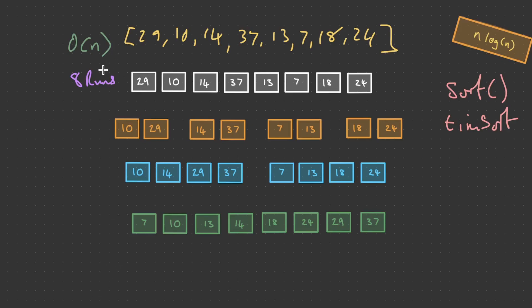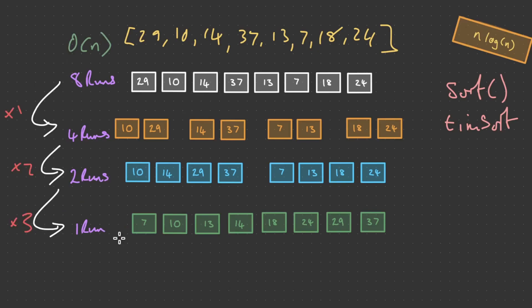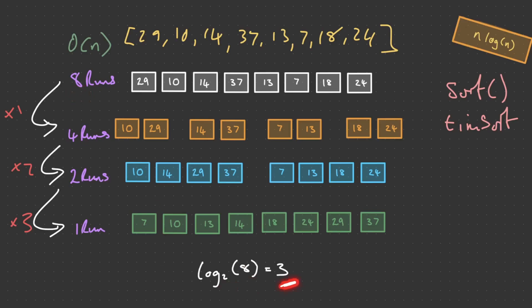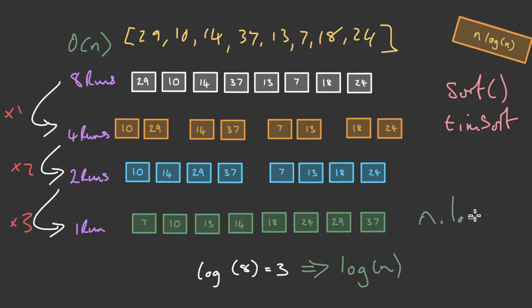The initial process of converting the array into eight runs takes linear time because we iterate through each value — so this part of Tim sort is O(N). For the conquering section, how many times do we divide eight runs to get to the last run? We go from eight runs to four, to two, to one — that's 3 times, expressed as log base 2 of 8 equals 3. Two is a constant so we can remove it, leaving log N. Combined with the linear pass, the overall time complexity is O(N log N).